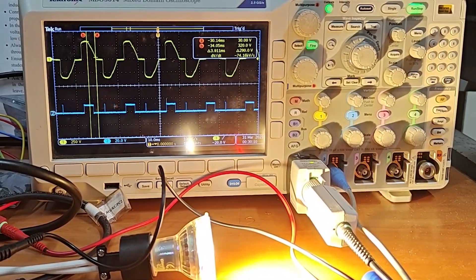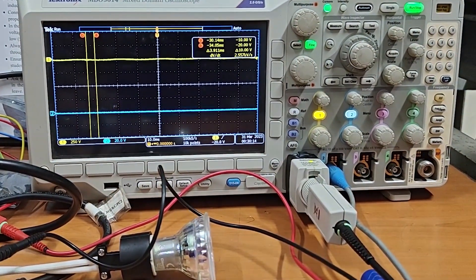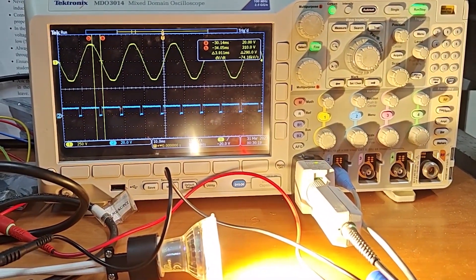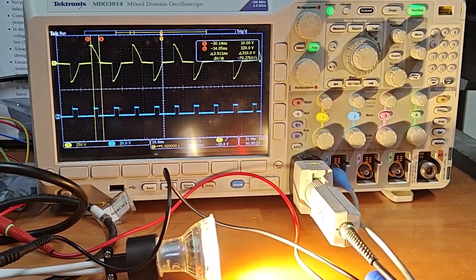here you can see the blue pulse is the control pulse given to the optocoupler, its pulse width is varied using the potentiometer knob and we see that the voltage waveform across the load is chopped off to produce varying levels of RMS voltage to the load.